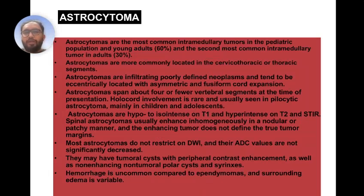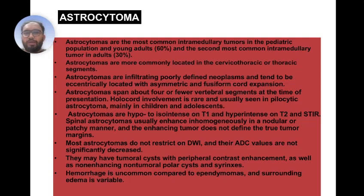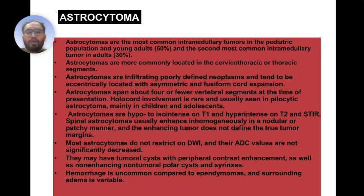Astrocytomas are the most common intramedullary tumor in the pediatric population and young adults, and the second most common in adults. They are most commonly located in the cervicothoracic and thoracic segments. Astrocytomas are infiltrating, poorly defined neoplasms and tend to be eccentrically located with symmetric and fusiform cord expansion, spanning about 4 or fewer vertebral segments at presentation. Holocord involvement is rare and usually seen in pilocytic astrocytomas, mainly in children and adolescents. They are hypo- to iso-intense on T1 and hyper-intense on T2, enhancing inhomogeneously in a nodular or patchy manner. The enhancing tumor does not define the true tumor margins. Most astrocytomas do not restrict on DWI and their ADC values are not significantly decreased. They may have tumoral cysts with peripheral contrast enhancement, as well as non-enhancing polar cysts and syrinx cysts. Hemorrhage is uncommon compared to ependymomas and surrounding edema is variable.